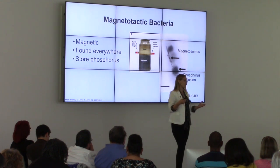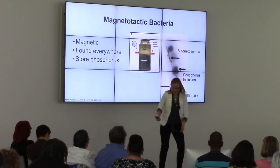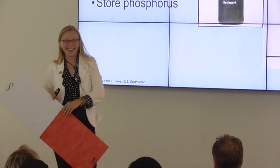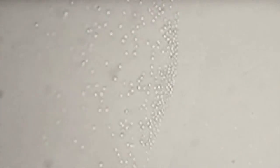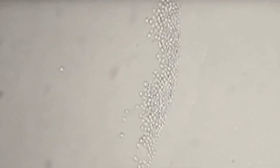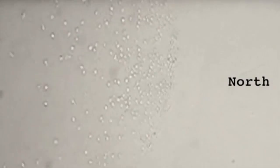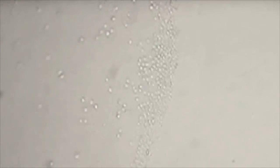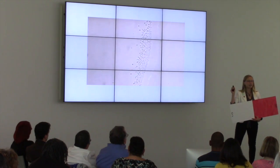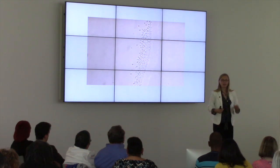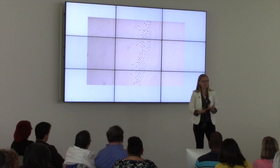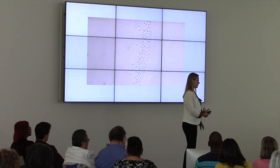The next slide shows a video of just how these bacteria move. They swim towards me when I hold the magnet, and then swim away when I turn it to the north end, and swim back towards me when I have the south end. This video is taken from a microscope slide — you can video-image these at a small scale to see their movements. Those tiny circles are all the bacteria that contain those magnets and the ability to absorb phosphorus from a water environment.